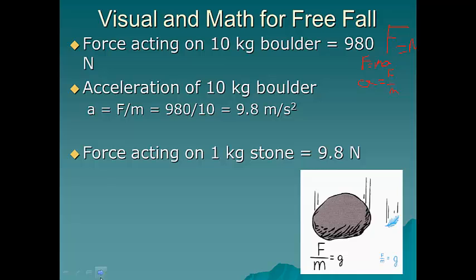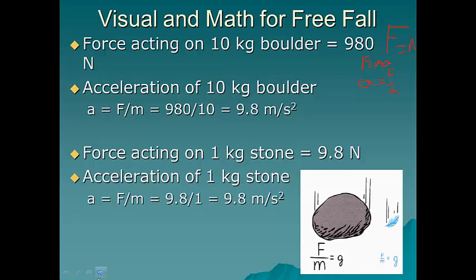The force acting on the 1 kilogram stone will be 9.8 newtons. The acceleration of the 1 kilogram stone will be a equals f over m equals 9.8 divided by 1 equals 9.8 meters per second squared.